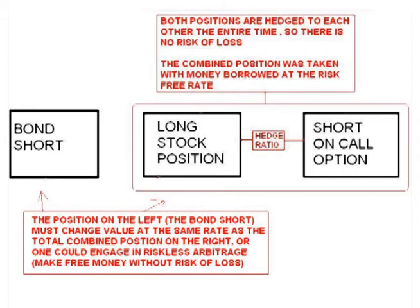Theoretically, if there are no commissions, one could continuously keep readjusting the stock position every time price moved throughout the entire life of the option, so that both positions are continuously balanced to each other and in doing so remove all risk of losing money. Therefore, if the portfolio does not increase at the risk-free rate, then there is an arbitrage opportunity. If the total position increases more than the risk-free rate, one would make free money with no chance of loss. If the position increased at a rate lower than the risk-free rate, one could reverse the positions — buy a call option and short the stock — and keep dynamically rebalancing to keep it hedged and still make free money without any risk of loss.